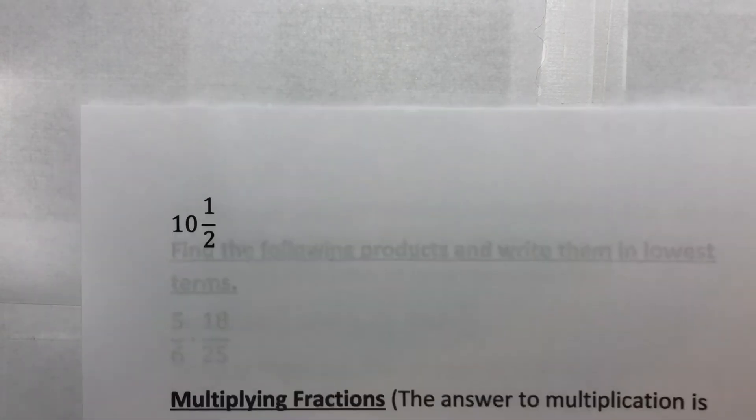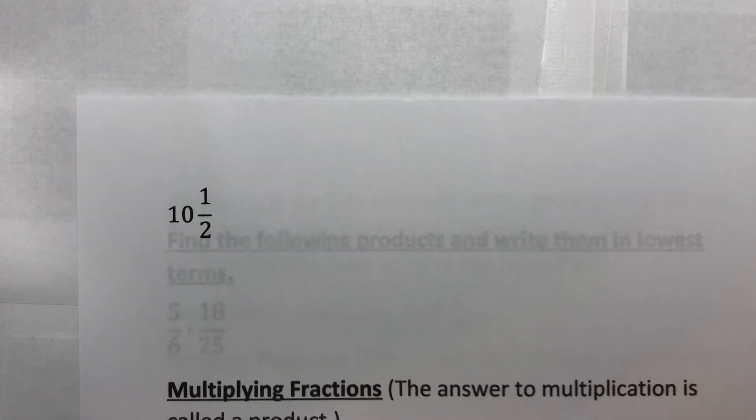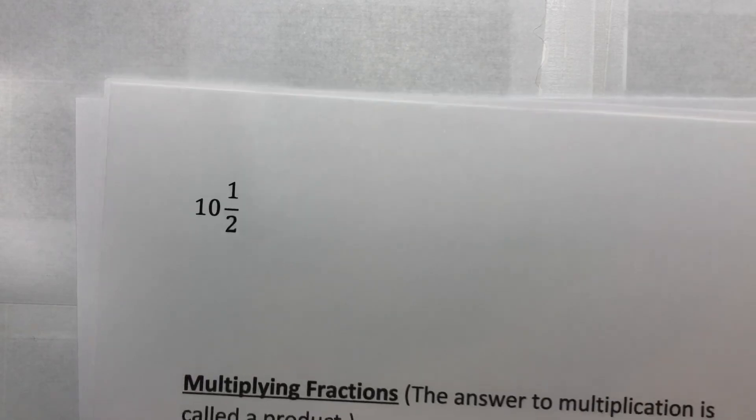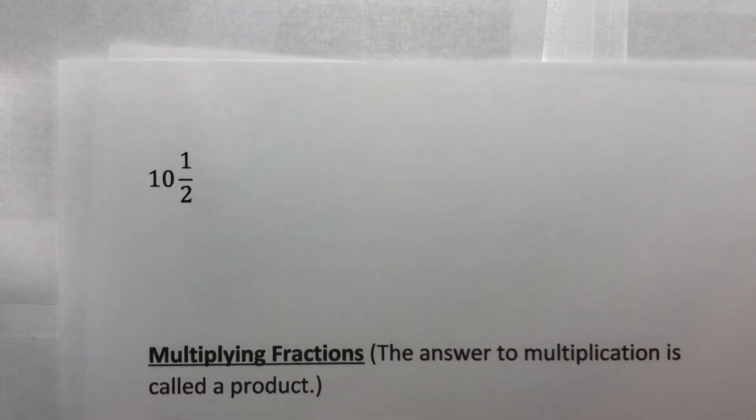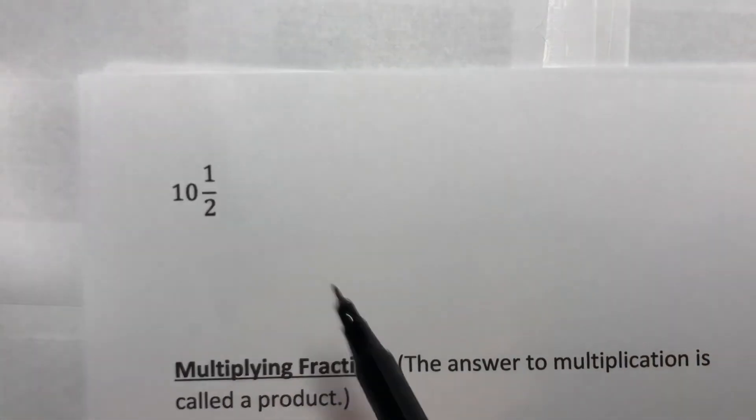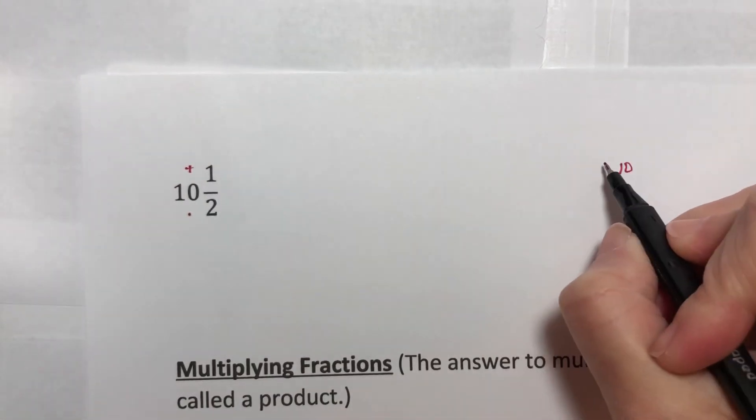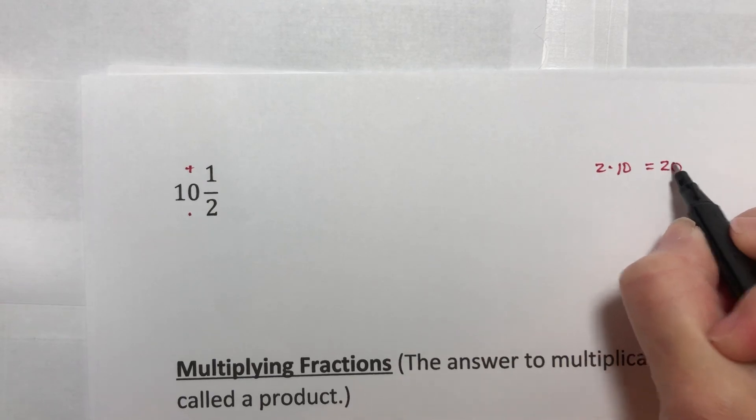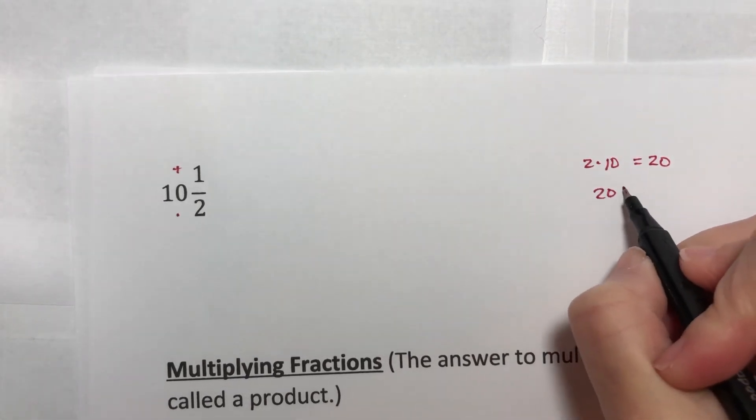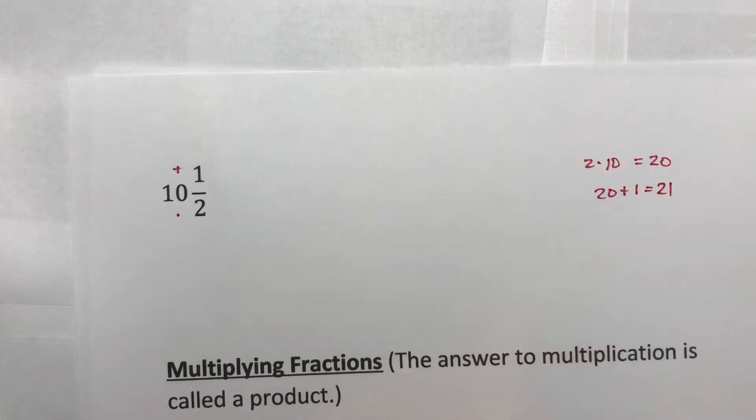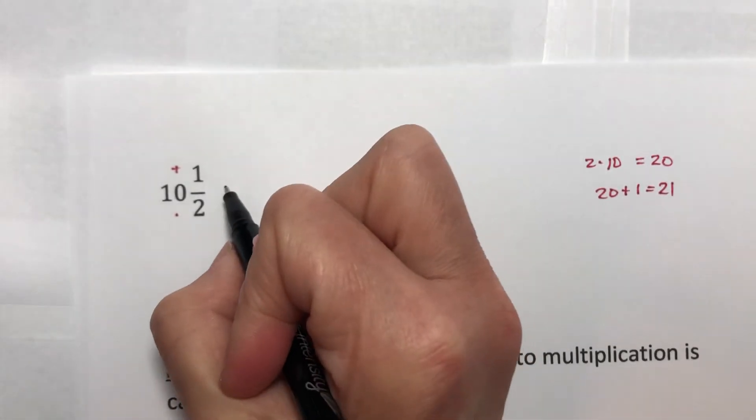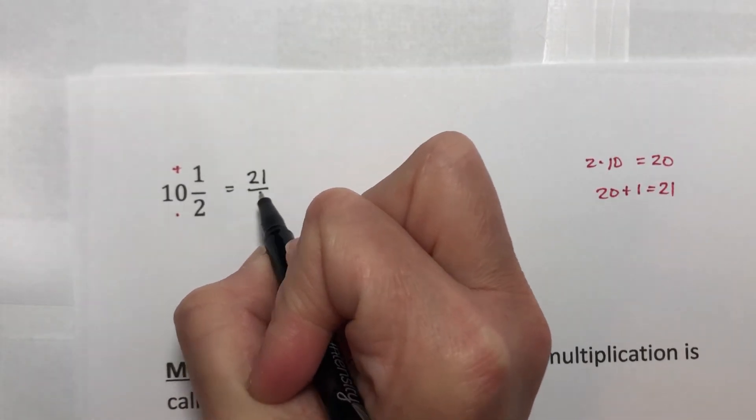Let's do one more. I'm going to convert 10 and 1 half to an improper fraction. Sliding another piece of paper here so it doesn't bleed through. Let's do 2 times 10 plus 1. 2 times 10 would be 20. 20 plus 1 is 21. So this is the same thing as 21 halves.